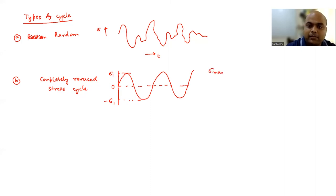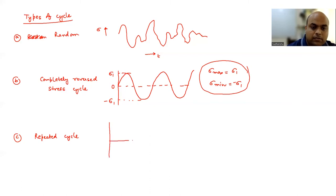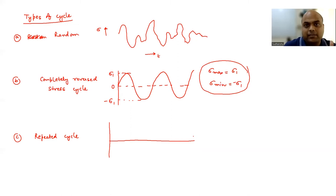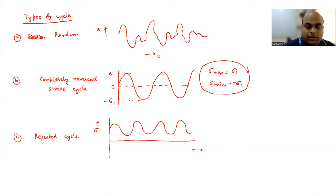In the completely reversed stress cycle, sigma_max equals sigma_1 and sigma_min equals –sigma_1. The third type is the repeated cycle, which is similar to the completely reversed cycle except that sigma_max is not equal in magnitude to sigma_min. The completely reversed stress cycle is actually a special case — a subset — of the repeated cycle, where sigma_max equals –sigma_min. These are the three types of cycles we can observe.